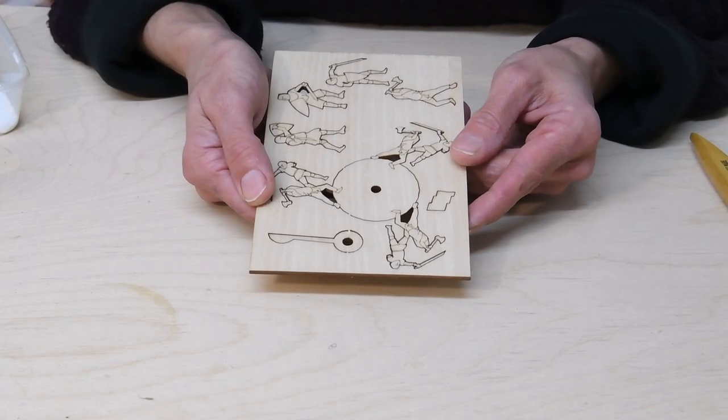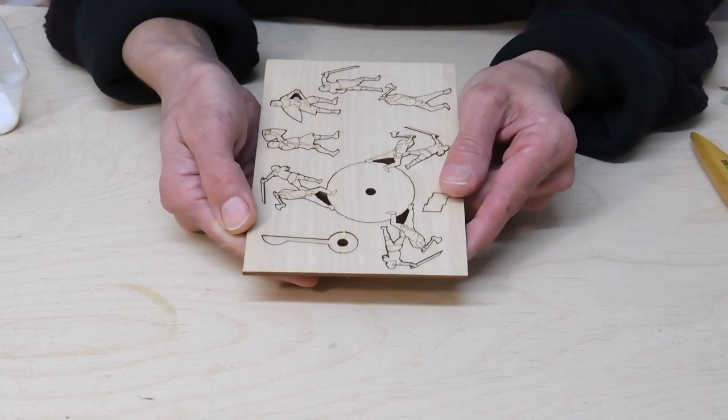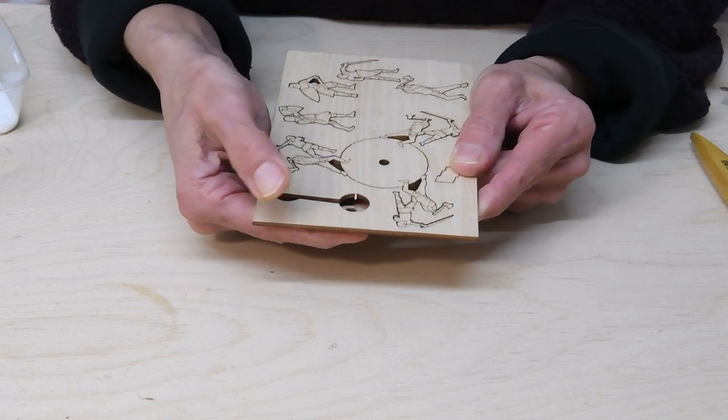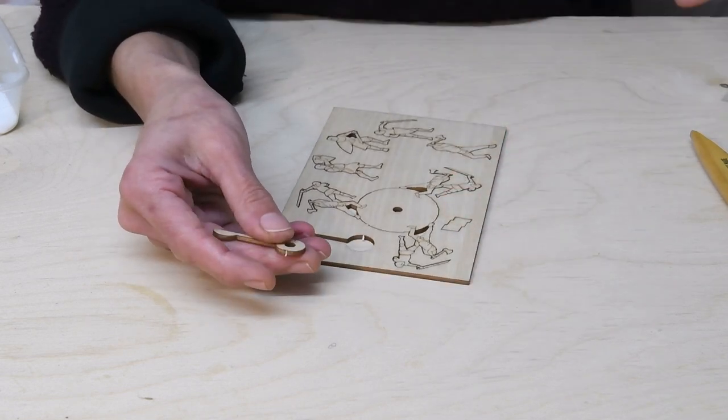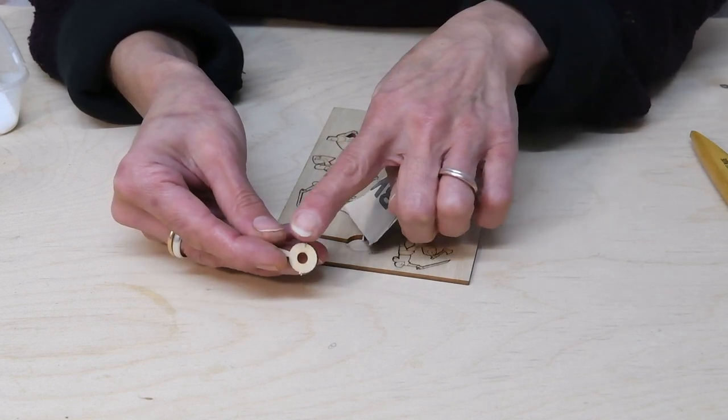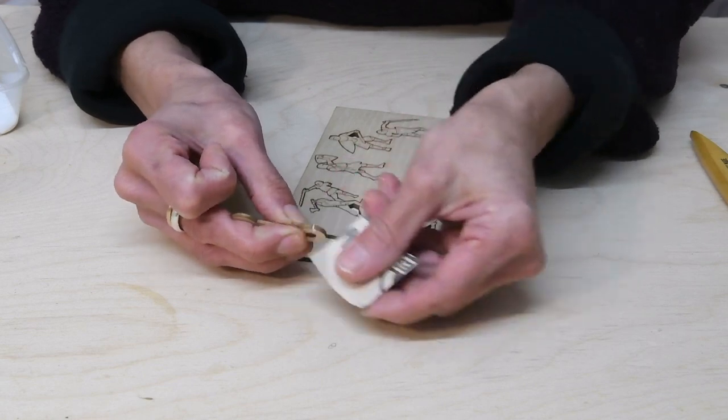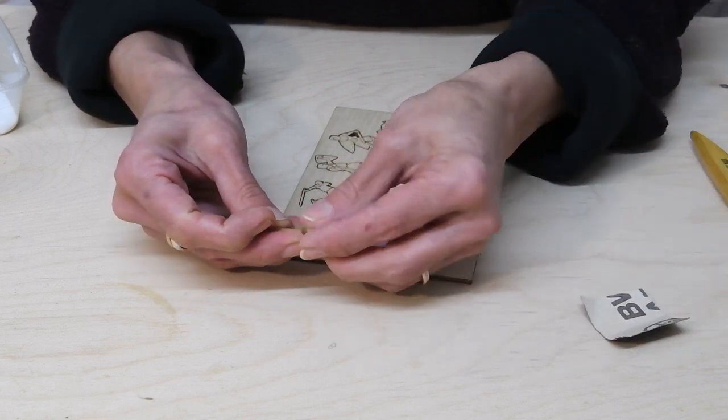Okay we're now ready to take these pieces out of their board. Some of them are very delicate so we have to do this very carefully. If you just push them they should fall out and then you can use the sandpaper to just take off any little rough bit.